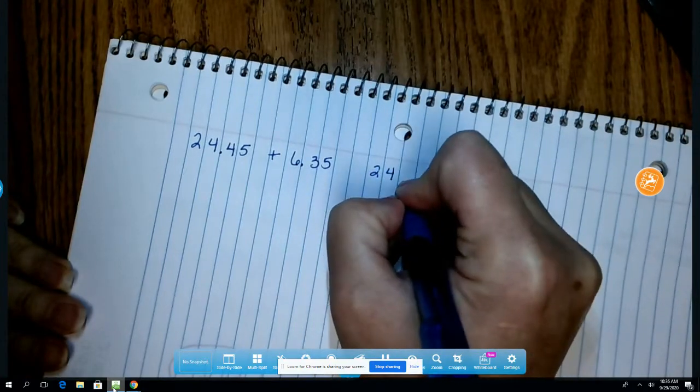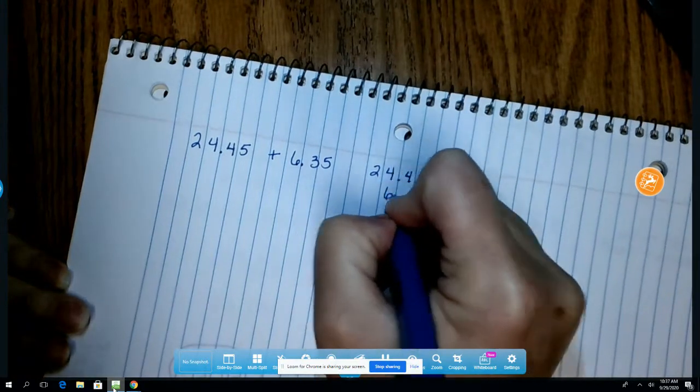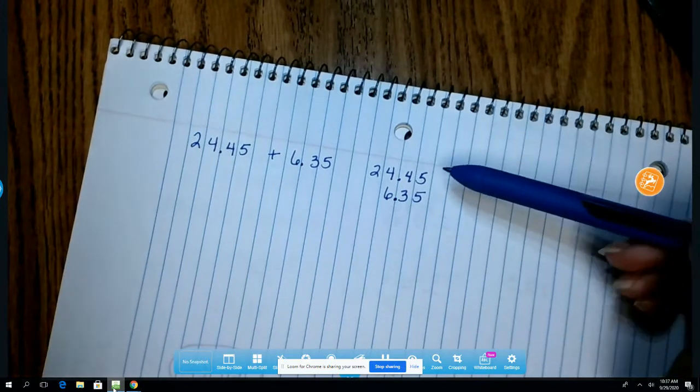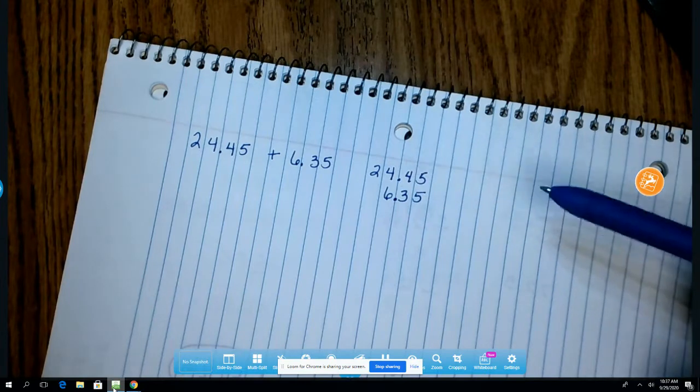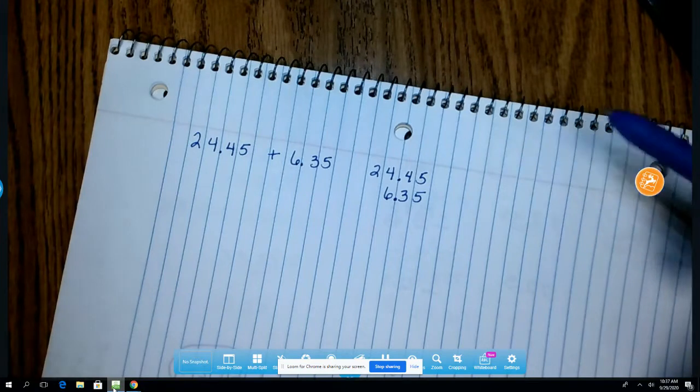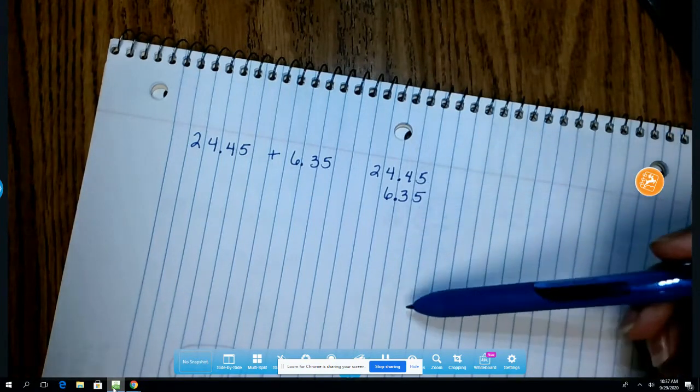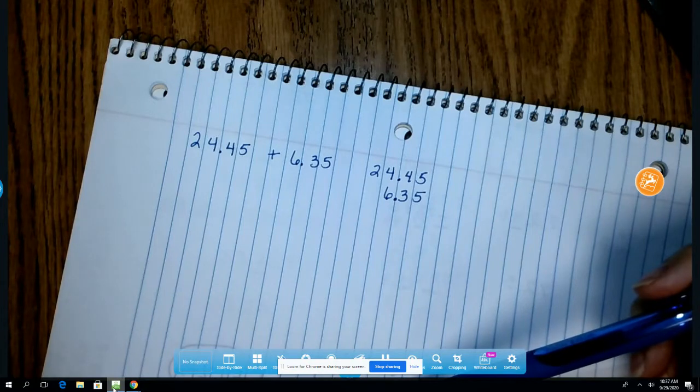So 24 and 45 hundredths and 6 and 35 hundredths. Okay and I want to keep my decimals lined up. This is going to help me make sure I have my decimal in the correct place in the answer. So since I have this turned sideways, the lines on my paper also help me make sure that I am keeping all of the tenths in the same row, all of the hundredths in the same row, and so on.